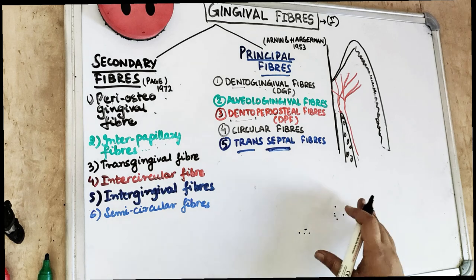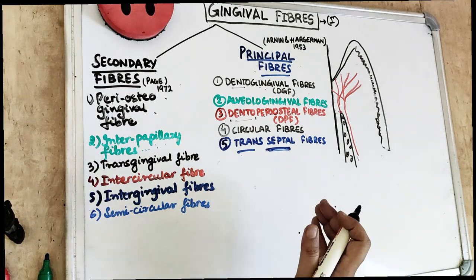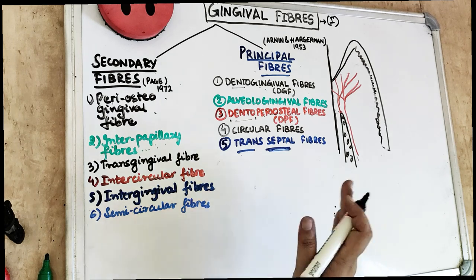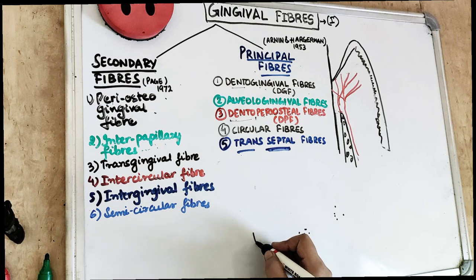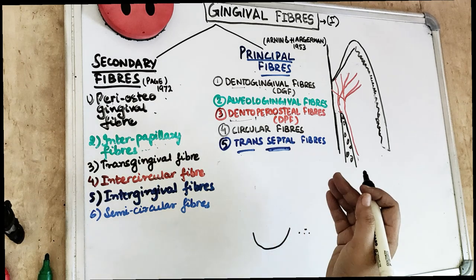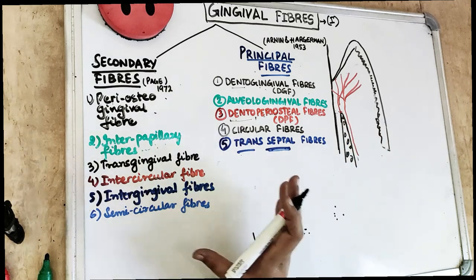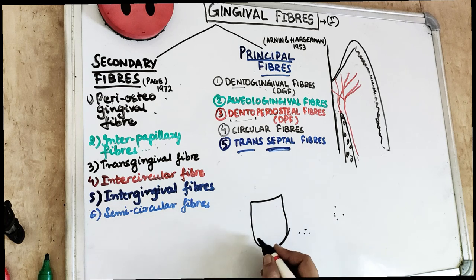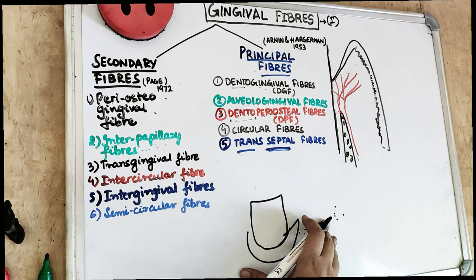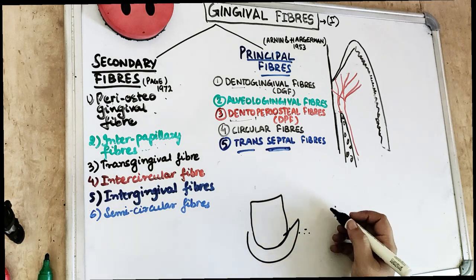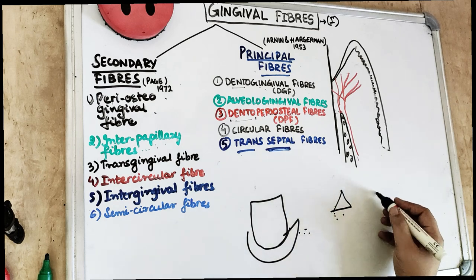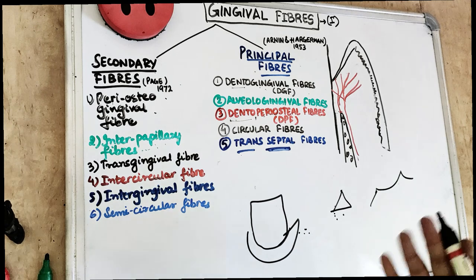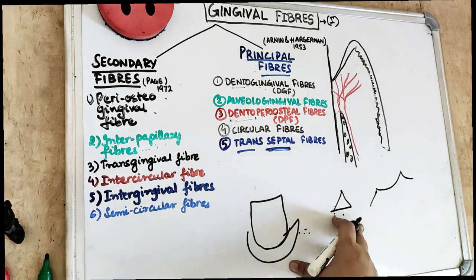The size of the gingiva is determined by the sum total of cellular, acellular (intercellular) elements, and vascular components — and alteration in size is a common feature of disease. The contour of the gingiva follows the contour of the embrasures of the tooth; the marginal gingiva envelops the tooth in a collar-like fashion following the scalloping of the facial and lingual surfaces. The shape of the interdental papilla is pyramidal in the anterior region and col-shaped or tent-shaped in the posterior region.